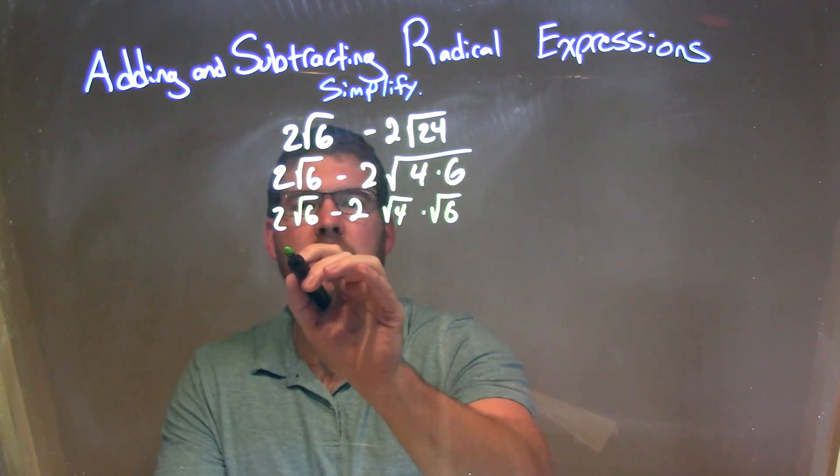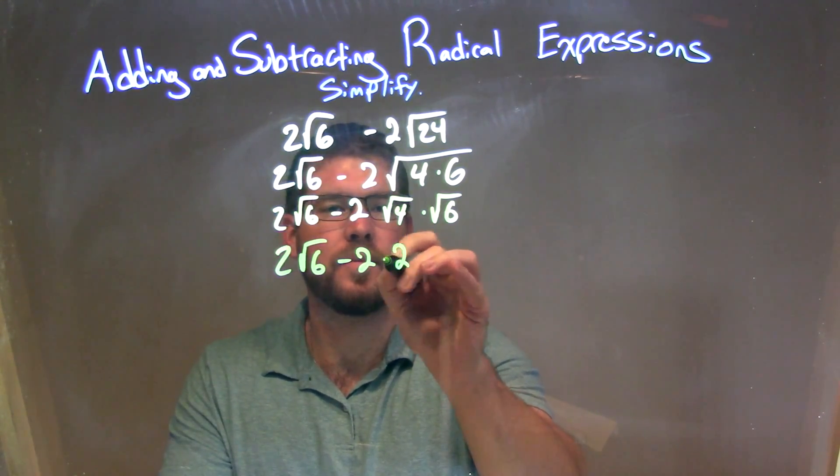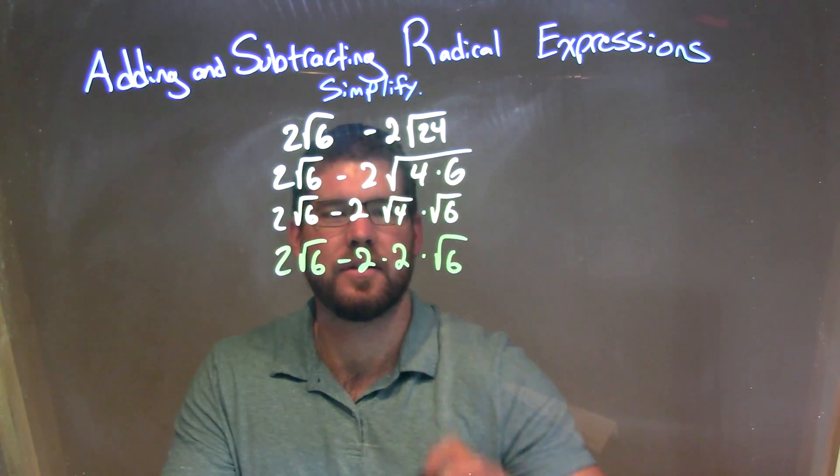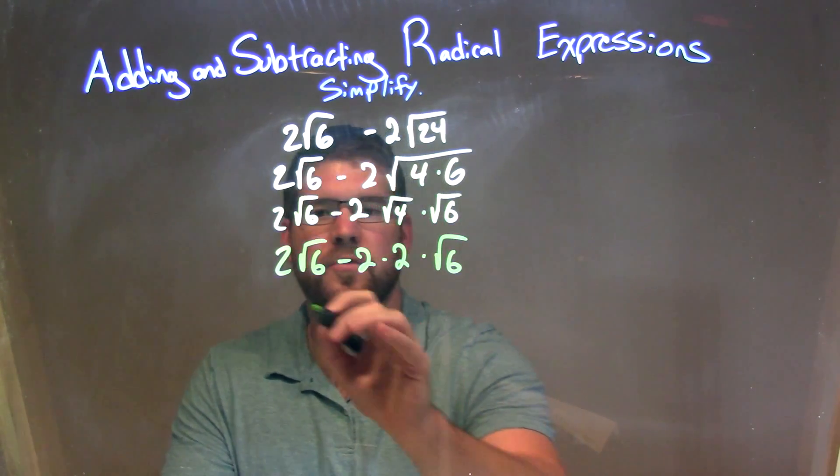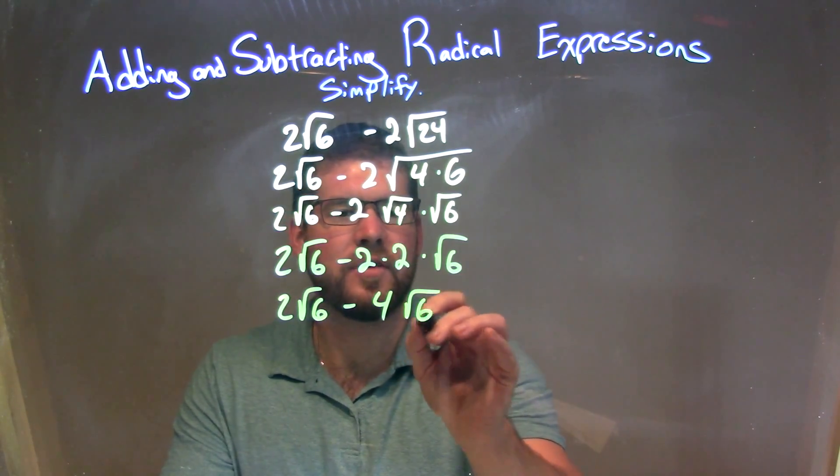The square root of 4 I know is 2. So we have 2 times the square root of 6 minus 2 times 2 times the square root of 6. Well, 2 times 2 is just 4, so we have 2 square root of 6 minus 4 square root of 6 there.